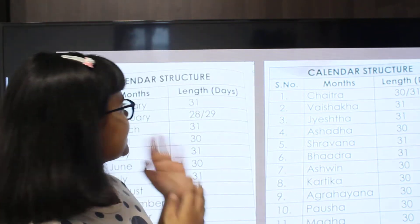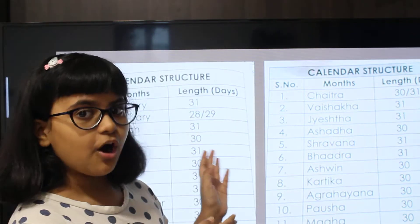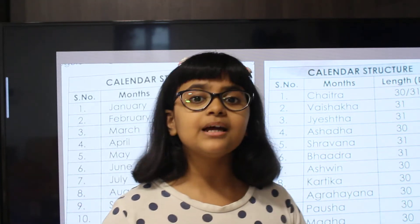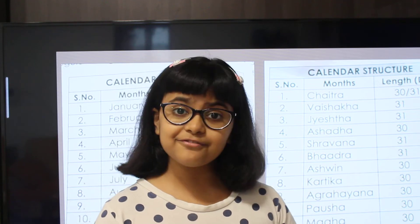Here is the structure of the Gregorian calendar. The Gregorian calendar is also known as the solar calendar — remember, not lunar calendar. This calendar is known as solar calendar, and it was introduced by Pope Gregory the 13th in October 1582.